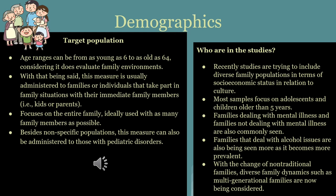Besides non-specific populations, this measurement can also be administered to those with pediatric disorders. The family units usually seen in studies include families dealing with mental illness as well as families not dealing with mental illness. Most prevalent are families that deal with alcohol issues, as they are the most commonly seen. Recent studies are also trying to include diverse family populations in terms of socioeconomic status and culture, and there is a noted change toward non-traditional families, such as multi-generational families, which are now being considered as well.